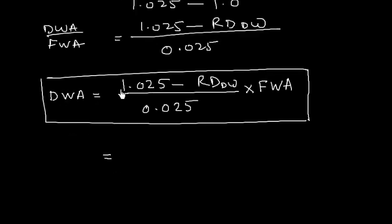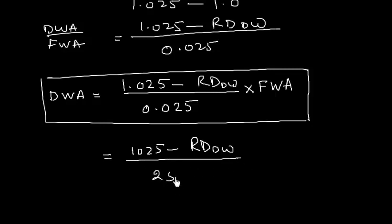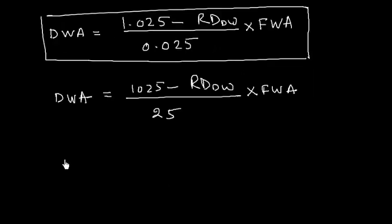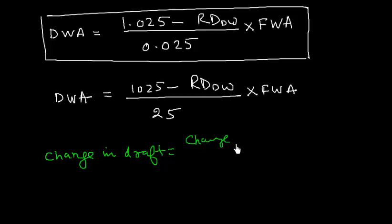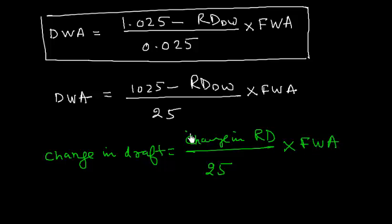We can also use this formula by multiplying both sides: dock water allowance equals (1.025 minus RD of dock water) multiplied by 1000, divided by 25, multiplied by fresh water allowance. Dock water allowance is nothing but the change in draft. So the formula can also be written as: change in draft equals change in relative densities (multiplied by 1000) divided by 25, multiplied by fresh water allowance.